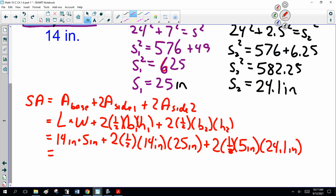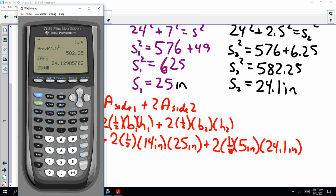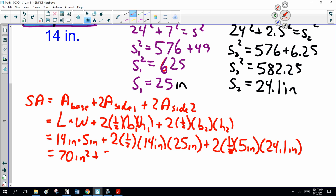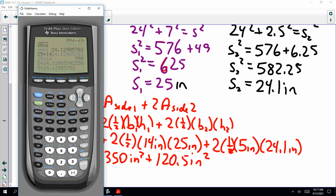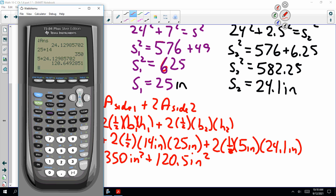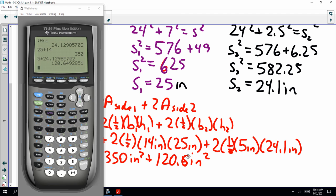So, 70 inches squared plus, I can't do that in my head. 25 times 14 is 350. 120.5 inches squared, I think, but I'm going to double check my math. Two times one half is one, so that's 5 times 24.1, which works out to be 120.6, right? So, I'm rounding off. And don't round off until the end.